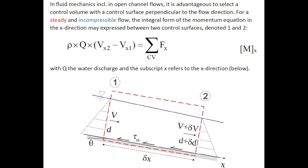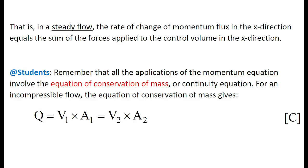In fluid mechanics, including open-channel flow, it is advantageous to select a control volume with a control surface perpendicular to the flow direction. For a steady and incompressible flow, the integral form of the momentum equation in the x-direction may be applied between two control surfaces, denoted 1 and 2: rho Q times (Vx2 minus Vx1) equals the sum of the forces applied to the control volume in the x-direction, with Q the water discharge and the subscript x referring to the streamwise direction. That is, in a steady flow, the rate of change of momentum flux in the x-direction equals the sum of the forces applied to the control volume in the x-direction.